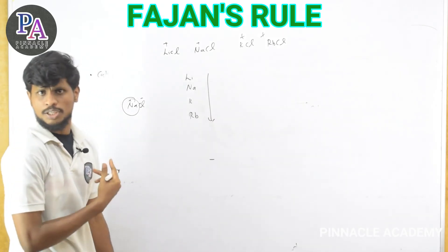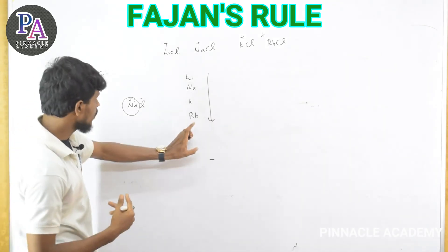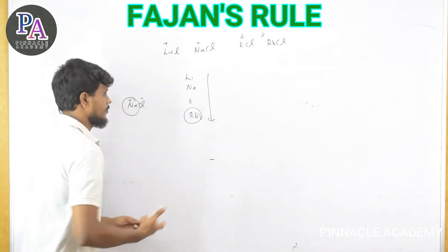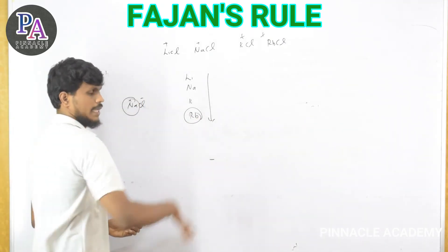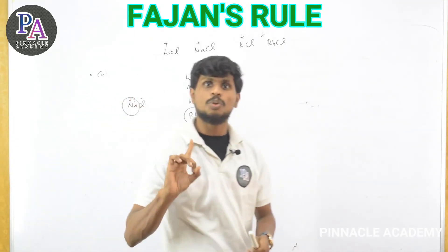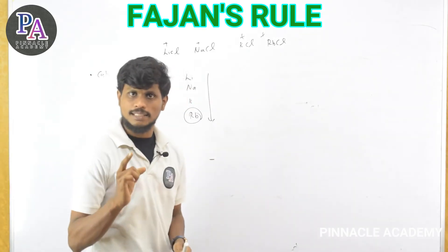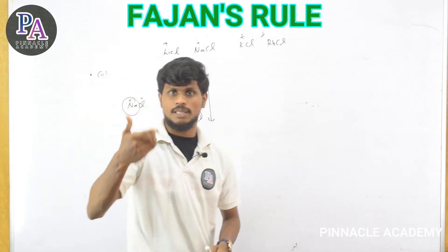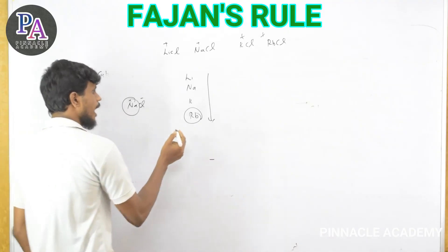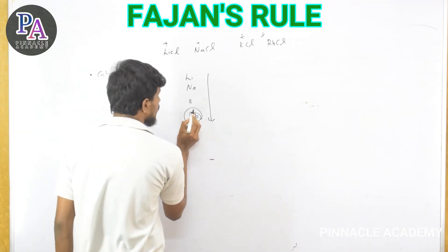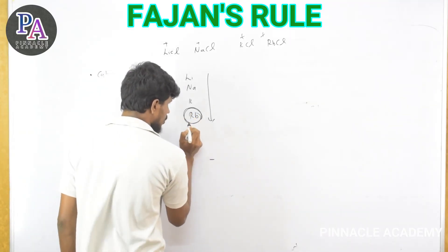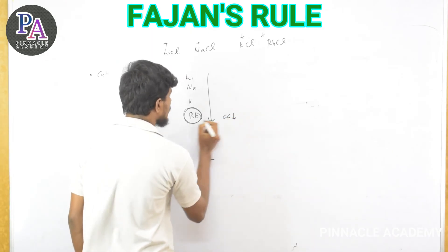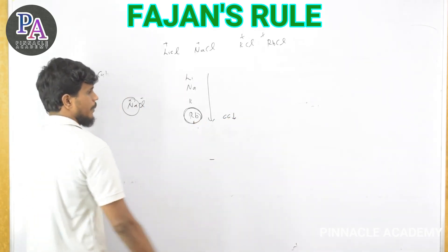As the size of the cation increases, the polarizing power decreases, so the covalent character decreases. A smaller cation has greater polarizing power and therefore produces greater covalent character. So LiCl has more covalent character than NaCl, which has more than KCl, and so on down the group.